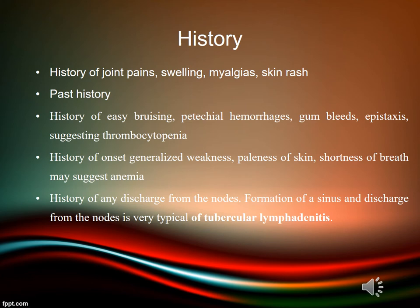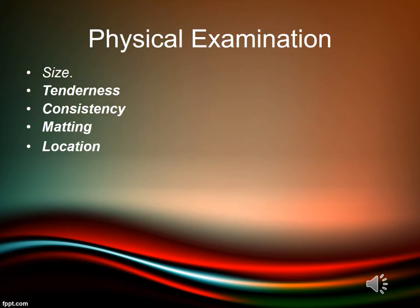Past history of tuberculosis or anti-tubercular therapy should be noted. History of easy bruising, petechial hemorrhage, gum bleed, or epistaxis suggests thrombocytopenia, which may occur in acute leukemias. History of generalized weakness, pallor, or shortness of breath may suggest anemia, a common feature of acute leukemia and hematological malignancies. History of discharge from nodes — sinus formation — is very typical of tubercular lymphadenitis.